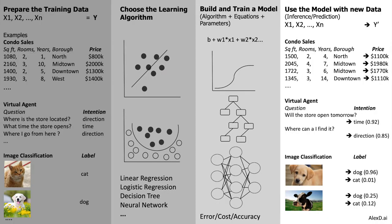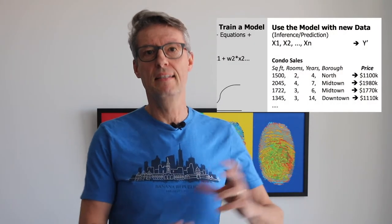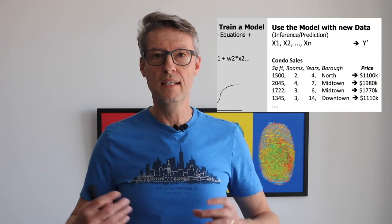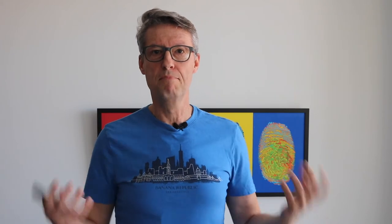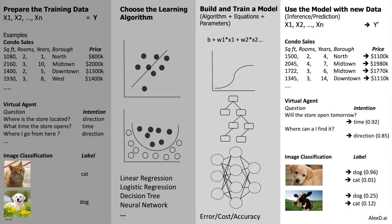With new data, we enter what is called the inference phase, or prediction phase. You provide new features and you want to predict the y — the result from the model. In the first example, the condo sale, you now have new data with new square feet, rooms, years, and neighborhood, and the objective is to predict what price would be associated with those features.